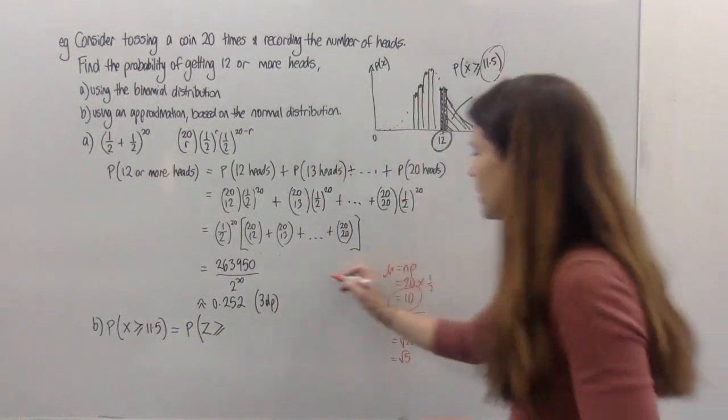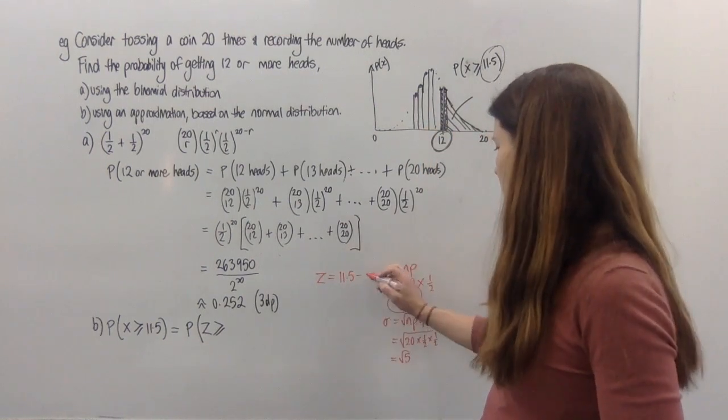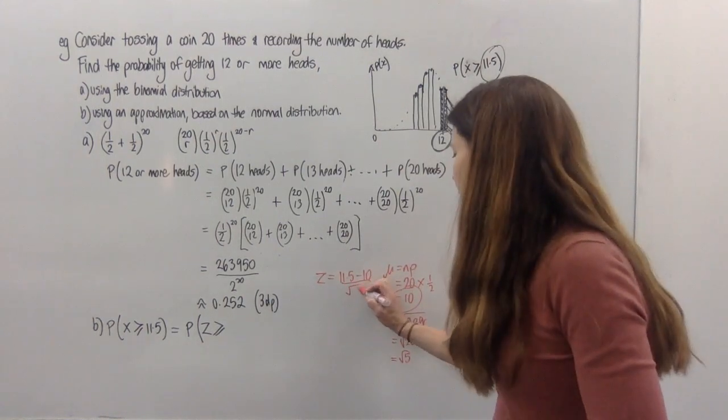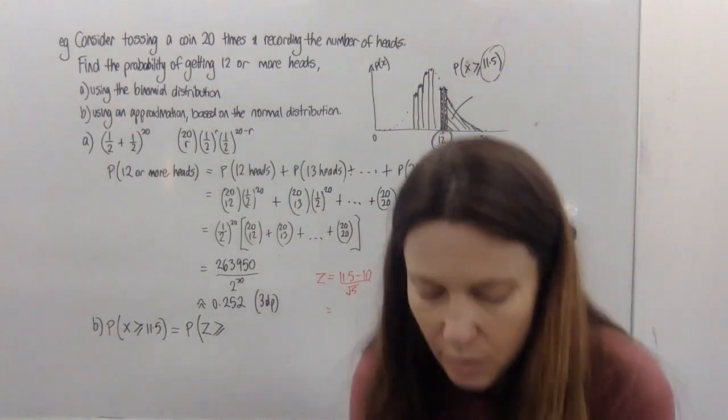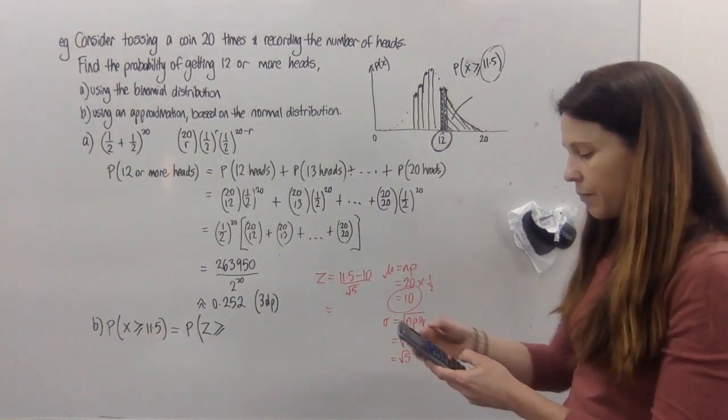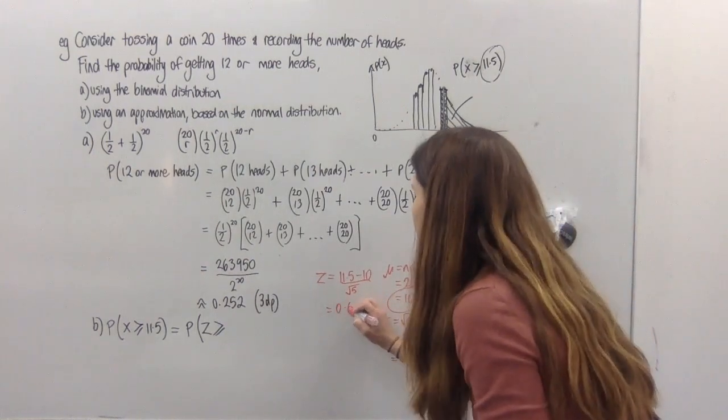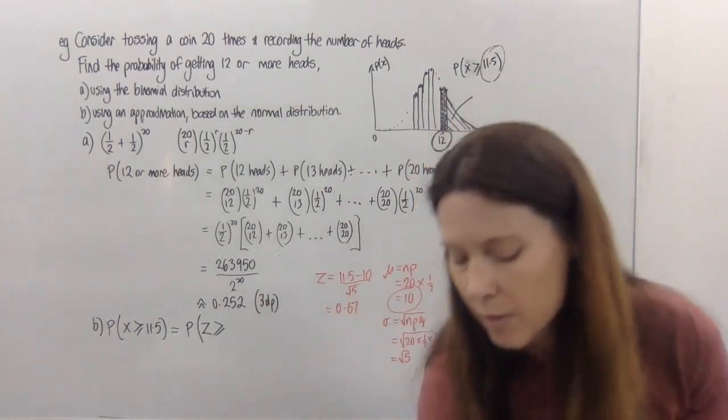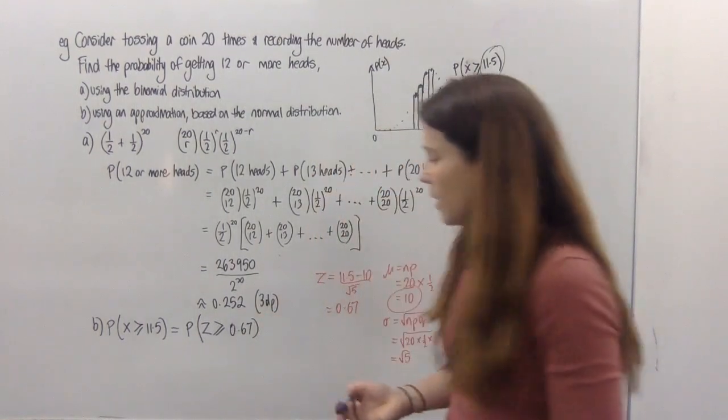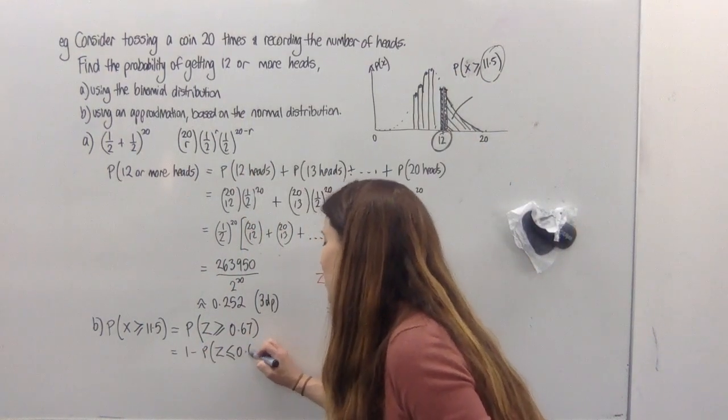So to find this as a Z score, we need to say, all right, Z is equal to 11.5, subtract the mean. That tells you how far above or below the mean it is, one and a half. And then we need to divide that by root 5. That will be our Z score. So figuring that out, we need 1.5 divided by root 5. And our Z score to two decimal places is 0.67. So in other words, we need to find the probability that Z is greater than 0.67.